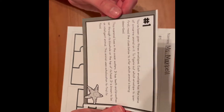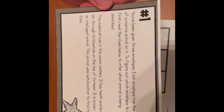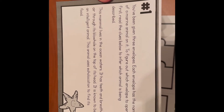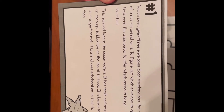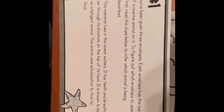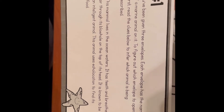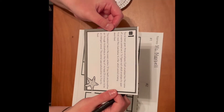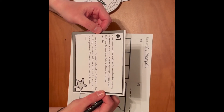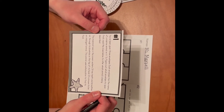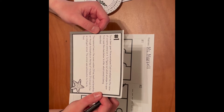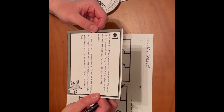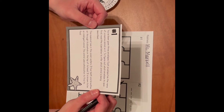It says: you've been given three envelopes. Each envelope has the name of a marine animal on it. To figure out which envelope to open first, read the clues below to infer which animal is being described. This mammal lives in the ocean waters, has teeth and breathes air through its blowhole on top of its head. It is known to be an intelligent animal, and this animal uses echolocation to find its food.